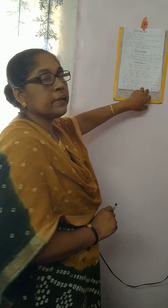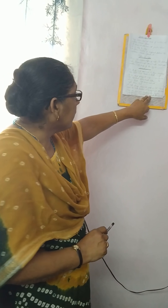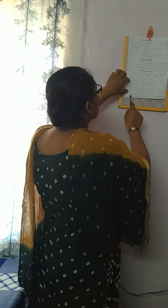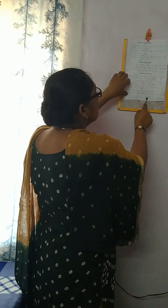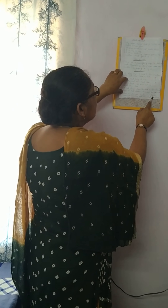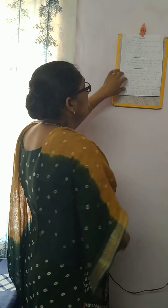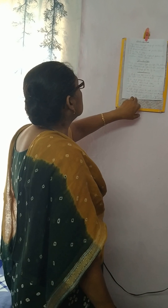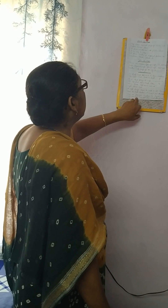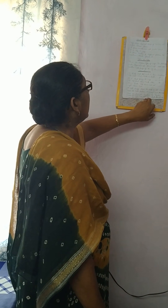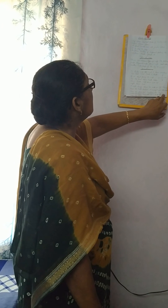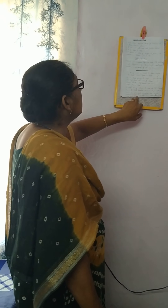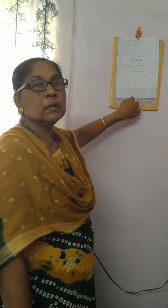Besides the four main directions, there are also four sub-directions: North East, North West, South East, and South West. Their short forms are NE, NW, SE, and SW.